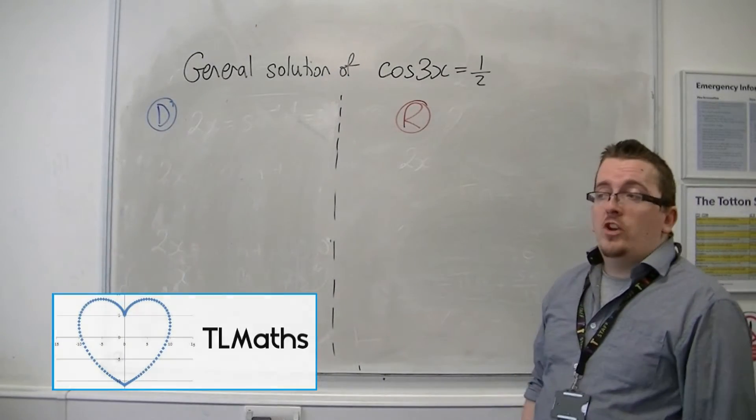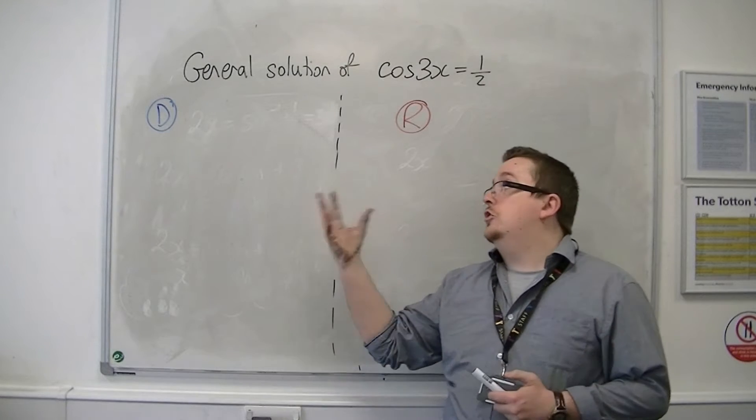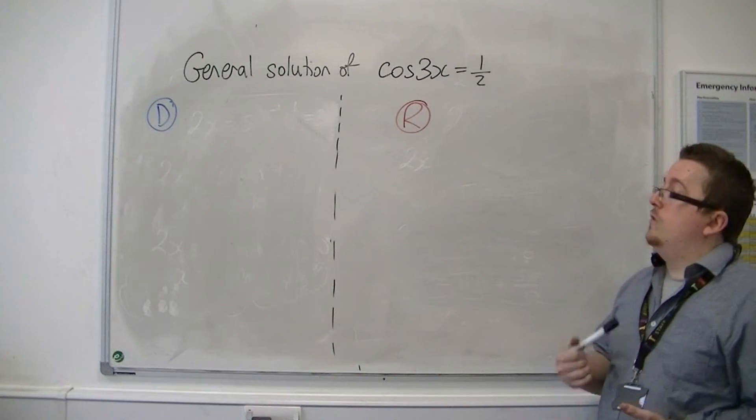So in this video we're going to be looking at the general solution of cos 3x equals 1 half. We're going to be doing it in degrees and we're going to be doing it in radians.